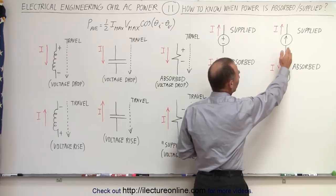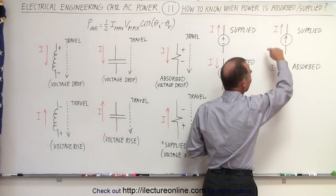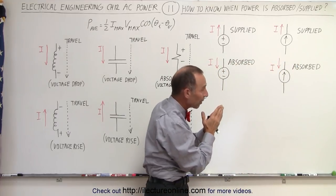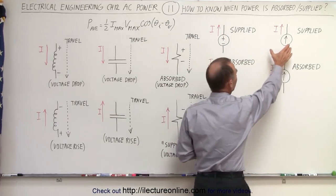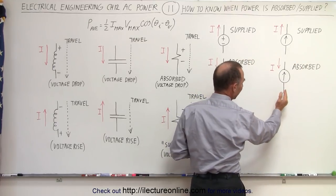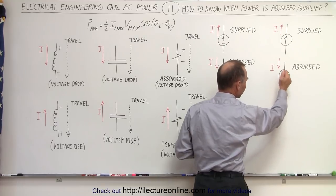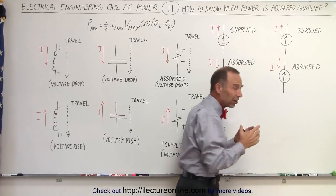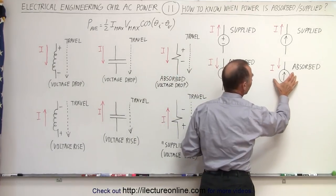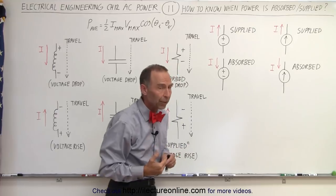If the current supply has a current in one direction and the current in that part of the mesh has the same direction, then we say that the current supply supplies power. However, if the direction of the current by the current supply is in one direction and the current in that mesh is in the other direction — if they're opposite — then we say that the current supply actually absorbs power rather than supplies power.